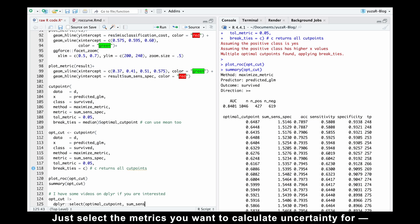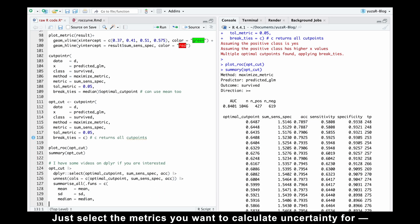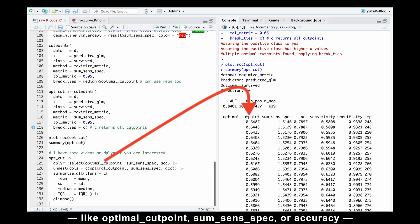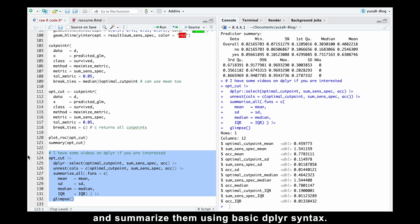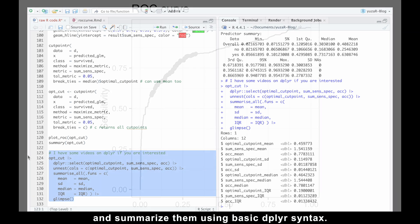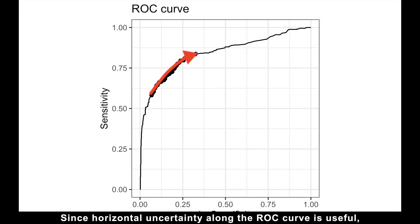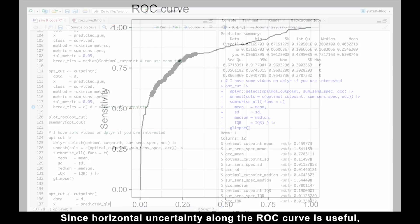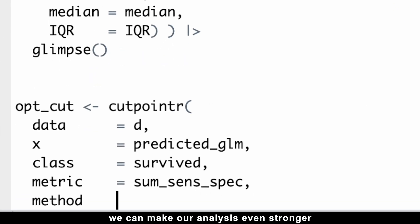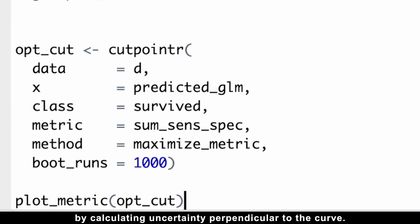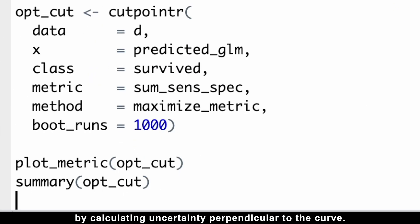It's simple. Just select the metric you want to calculate uncertainty for, like optimal cutpoint, sum of specificity and sensitivity, or accuracy, and summarize them using basic dplyr syntax. Since horizontal uncertainty along the ROC curve is useful, we can make our analysis even stronger by calculating uncertainty perpendicular to the curve.